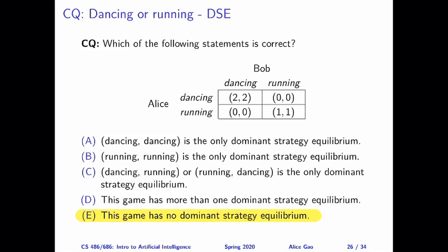So even though our intuition tells us that either dancing dancing or running running both can be reasonable outcomes of this game, dominant strategy equilibrium does not give us any prediction about how the players will behave.